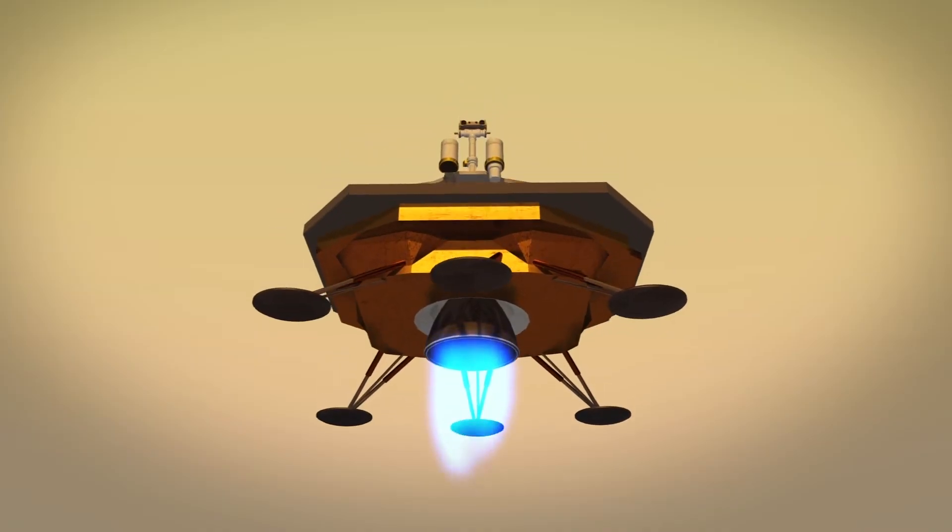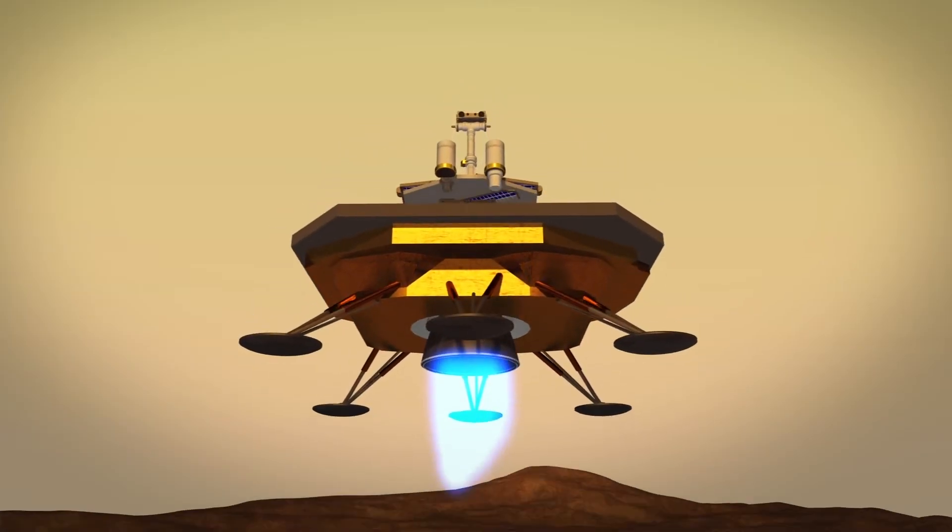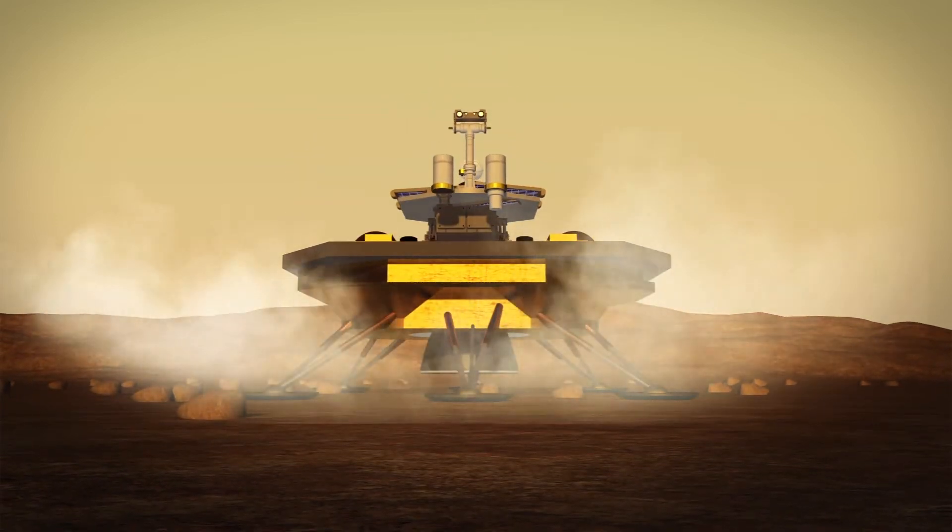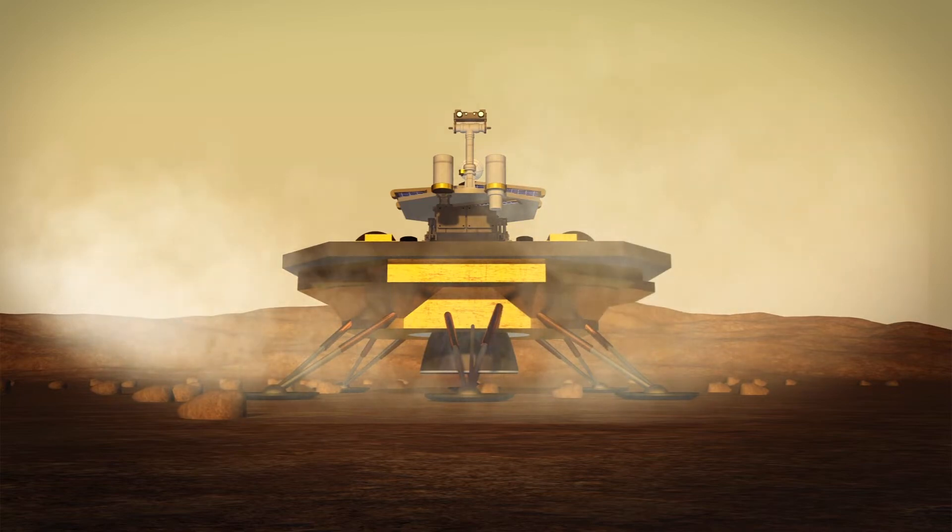China's Mars mission is being called the Mars Global Remote Sensing Orbiter and Small Rover, or HX-1. According to the State Council of the People's Republic of China's website, the lander is expected to touch down on the northern hemisphere of Mars.